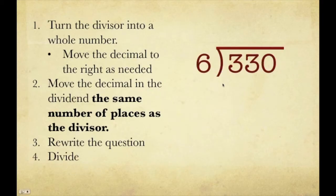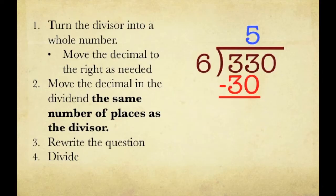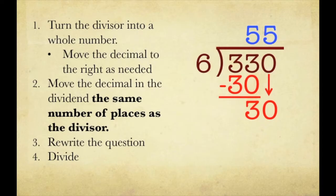Now we do our work and divide. Can 6 go into 3? No. Can 6 go into 33? Yes — 5 times. 5 times 6 is 30, subtract that. 33 minus 30 is 3. Bring down our 0. How many times does 6 go into 30? That's 5 times. 6 times 5 is 30, subtract that, we get 0. We're done. Our answer is 55.